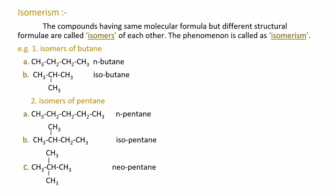For example, isomers of butane: Butane has two isomers - first n-butane, second isobutane.